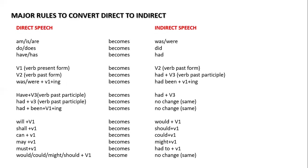V1 simple present becomes V2 simple past. V2 simple past becomes past perfect — 'had' plus V3. 'Was/were' plus V1 plus ING — present continuous — becomes past continuous. Past perfect continuous: 'had been' plus V1 plus ING. 'Have' plus V3 — present perfect — becomes past perfect. For example, 'have worked' becomes 'had worked.' 'Had' plus V3 — past perfect — no change. 'Had been' plus V1 plus ING — past perfect continuous — no change; same as it is.